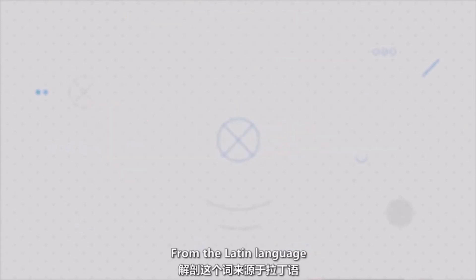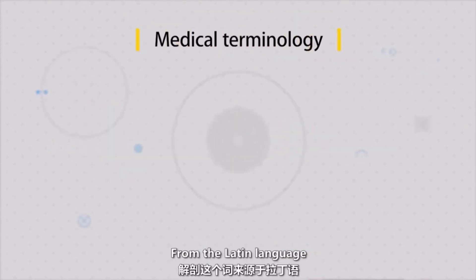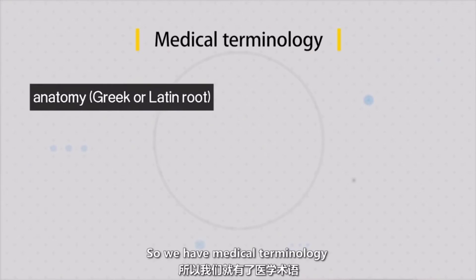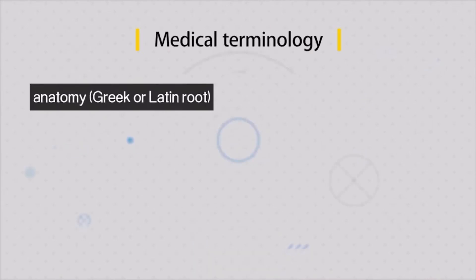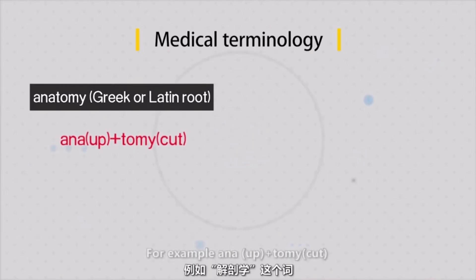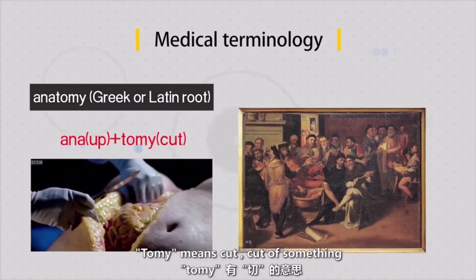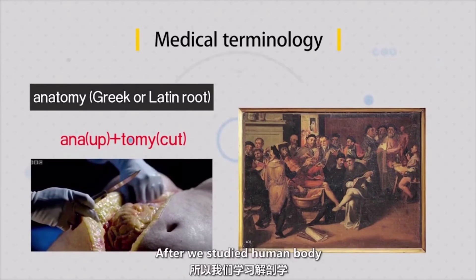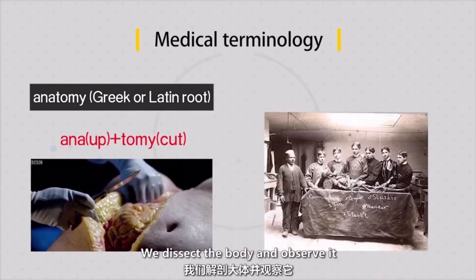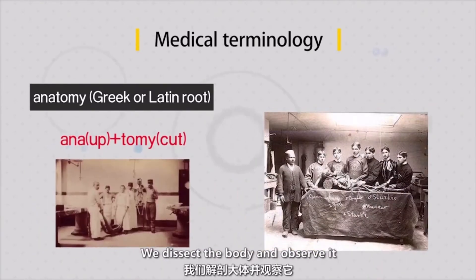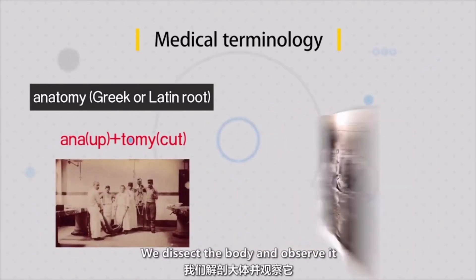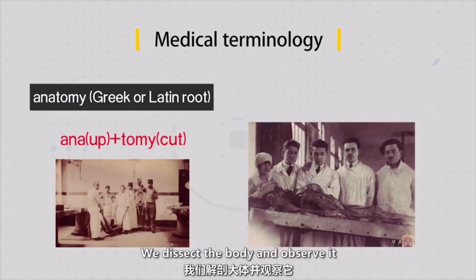Anatomy comes from the Latin language, so we have medical terminology with Latin roots. For example, 'anatomy' — 'tome' meaning cut. So we just cut something open. We study the human body by cutting it open and looking inside at what is there.